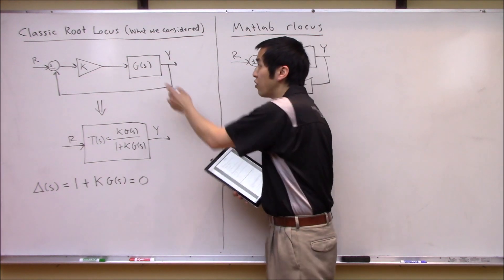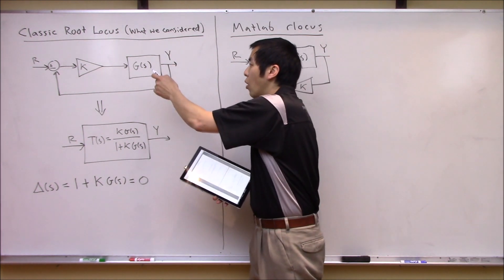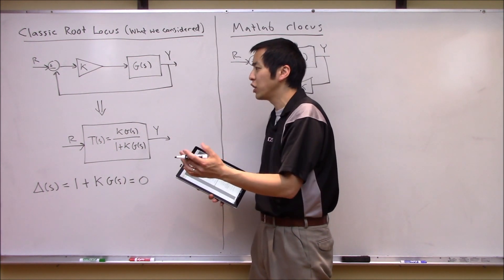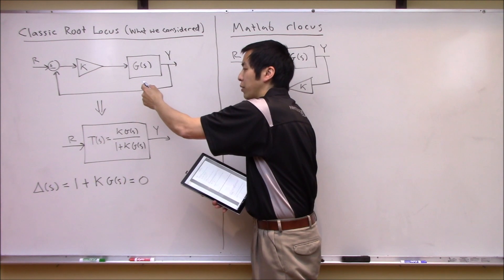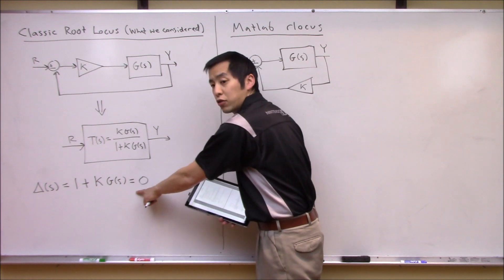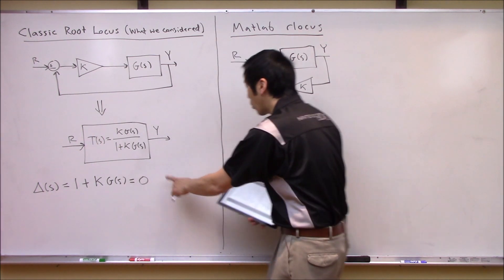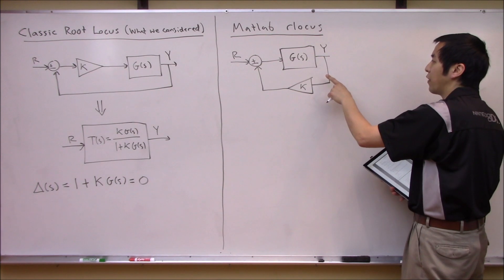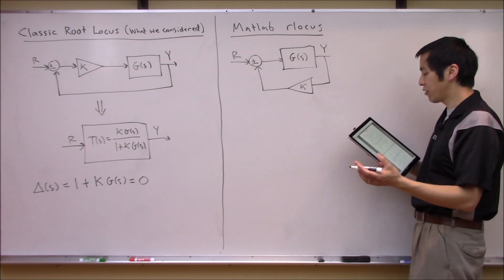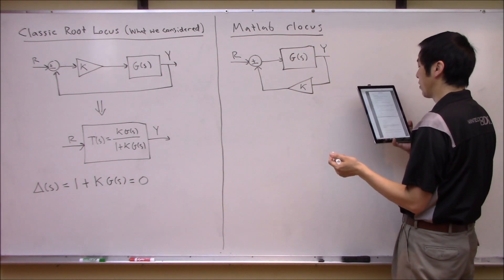The classical root locus architecture we considered previously is the basis for all of those rules for sketching root locus. It had a specific closed loop transfer function and therefore a specific closed loop characteristic equation — 1 plus KG(s) equals zero — which governed the root locus. The question now is: when MATLAB provides the rlocus function, they consider a different architecture where K is placed differently. We have to ask ourselves, is there a problem? Let's compute the closed loop transfer function for the architecture MATLAB considers.